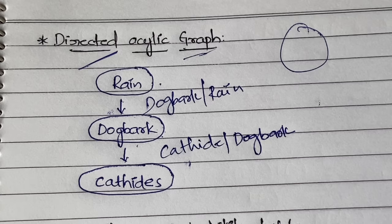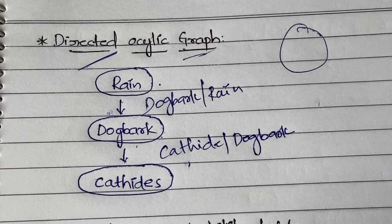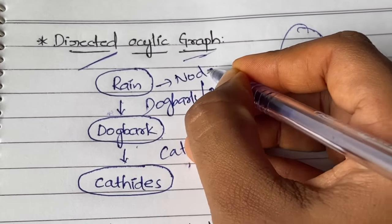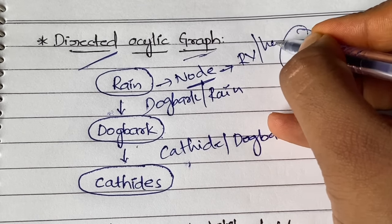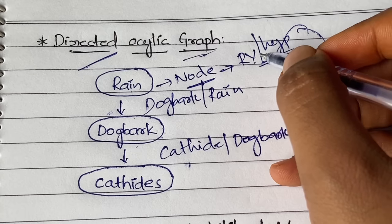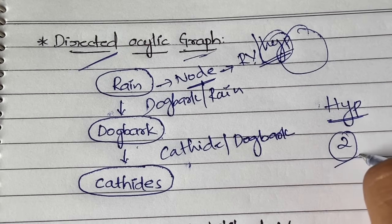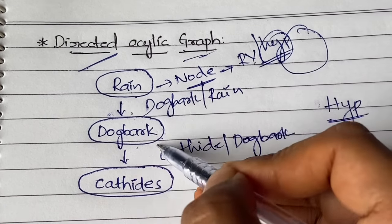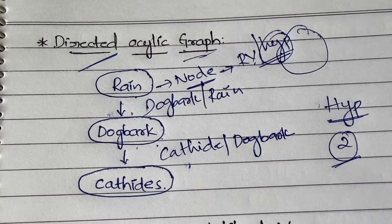Before discussing the Conditional Probability Table, note that 'Rain' here is called a node, which you can also call a random variable or a hypothesis. Each hypothesis should always have two probabilities: it may rain or it may not rain, the dog may bark or may not bark, the cat may hide or may not hide. So there are always two probability outcomes.